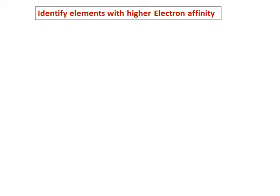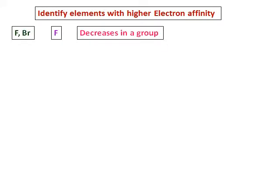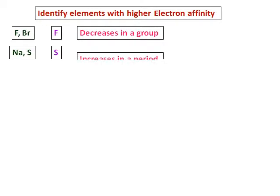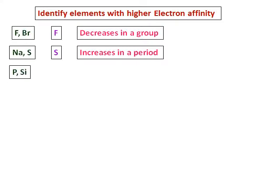Now some questions on electron affinity — identify elements with higher electron affinity. Between fluorine and bromine, fluorine is the answer because electron affinity generally decreases going down a group, and fluorine sits at the far right of the periodic table. Between sodium and sulfur, sulfur has higher electron affinity because electron affinity increases in a period. Sodium prefers to lose an electron rather than accept one.